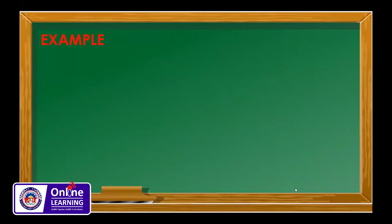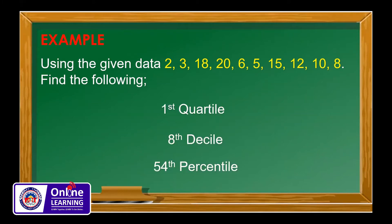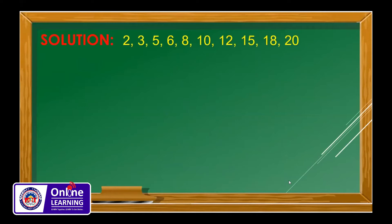For our example, using the given data 2, 3, 18, 20, 6, 5, 15, 12, 10, and 8, we need to find the first quartile, the 8th decile, and the 54th percentile. The first thing we do is arrange the data in increasing order: 2, 3, 5, 6, 8, 10, 12, 15, 18, and 20.